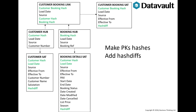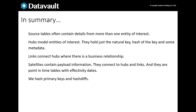Here we've added the primary key hashes to each table. Satellites also have hash diffs added. Satellites inherit their parent hub or link's primary key hash and use load date as an additional column to create a compound key. In summary, the booking table is quite rich, though most source tables are simpler and mapped to one or two hubs at most. That richness translates into multiple entities of interest — those become hubs, details become satellites of hubs, and if hubs are linked we add links, which can also have satellites. We add metadata, hash the natural keys, and use hash diffs to detect if payloads change to drive our point-in-time logic.